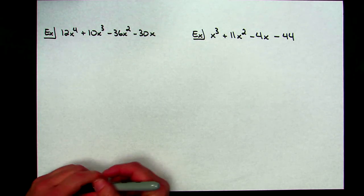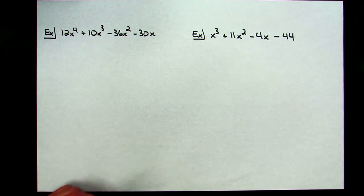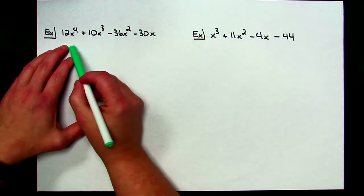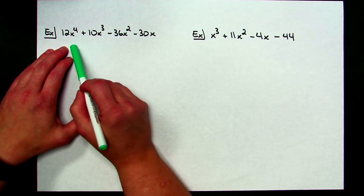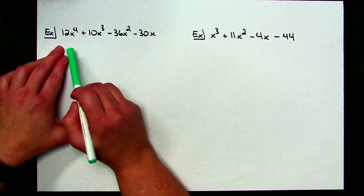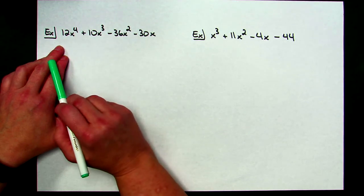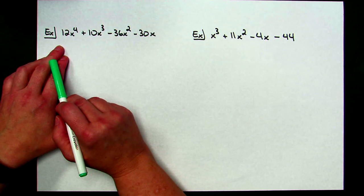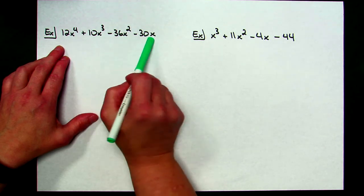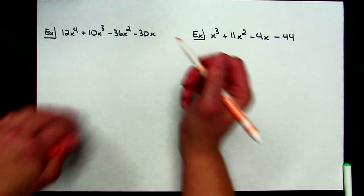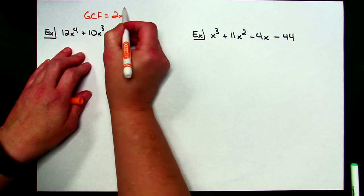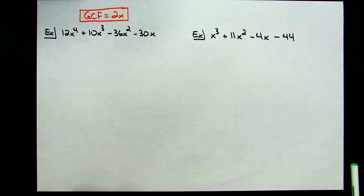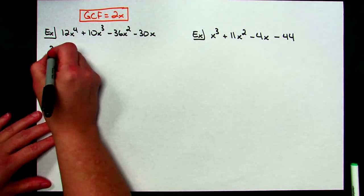Taking a look at two more examples, we're going to see a couple other scenarios you might run into when doing factor by grouping. For this third example, again, four terms — that's a dead giveaway I should be doing factor by grouping. However, if you take a good look at all of your coefficients, they're all even numbers, so I'm going to be able to factor out a greatest common factor before I even start doing my factor by grouping. Also there are x's in each of them, so I can take out a GCF there as well. The biggest number I can take out is going to be a 2x.